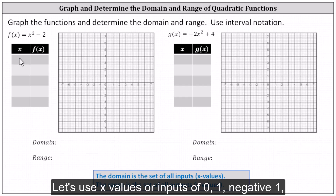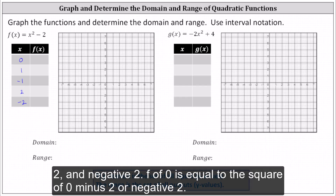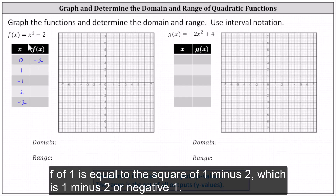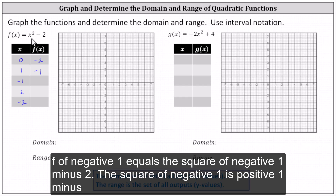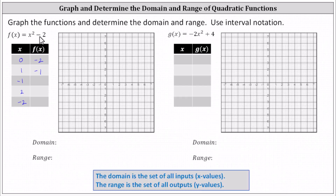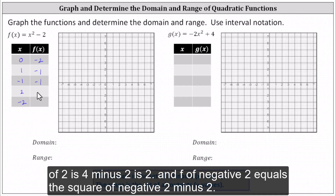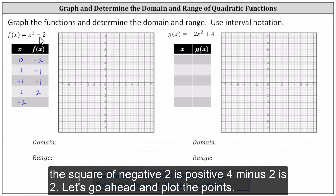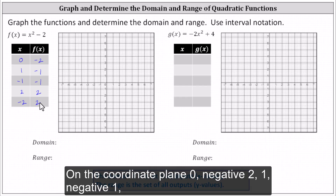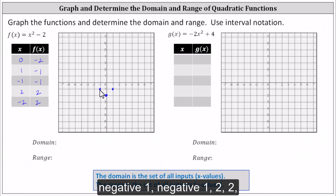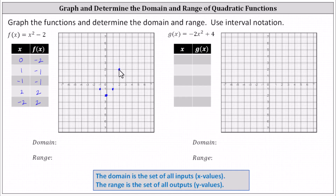Let's use x values or inputs of zero, one, negative one, two, and negative two. f of zero equals the square of zero minus two, or negative two. f of one equals the square of one minus two, which is one minus two or negative one. f of negative one equals the square of negative one minus two; the square of negative one is positive one, and positive one minus two is negative one. f of two equals the square of two minus two; the square of two is four, and four minus two is two. f of negative two equals the square of negative two minus two; the square of negative two is positive four, and positive four minus two is two. Let's plot the points: zero comma negative two, one comma negative one, negative one comma negative one, two comma two, and negative two comma two.